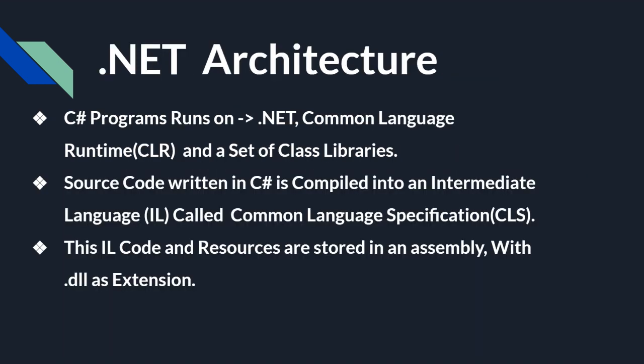Now let us understand .NET architecture. C# programs run on three main components: the .NET framework, Common Language Runtime (CLR), and a set of class libraries. Source code written in C# is compiled into an intermediate language called Common Language Specification (CLS), which is an important concept in .NET. This IL code and the resources needed to run it are stored in an assembly with a .dll extension.